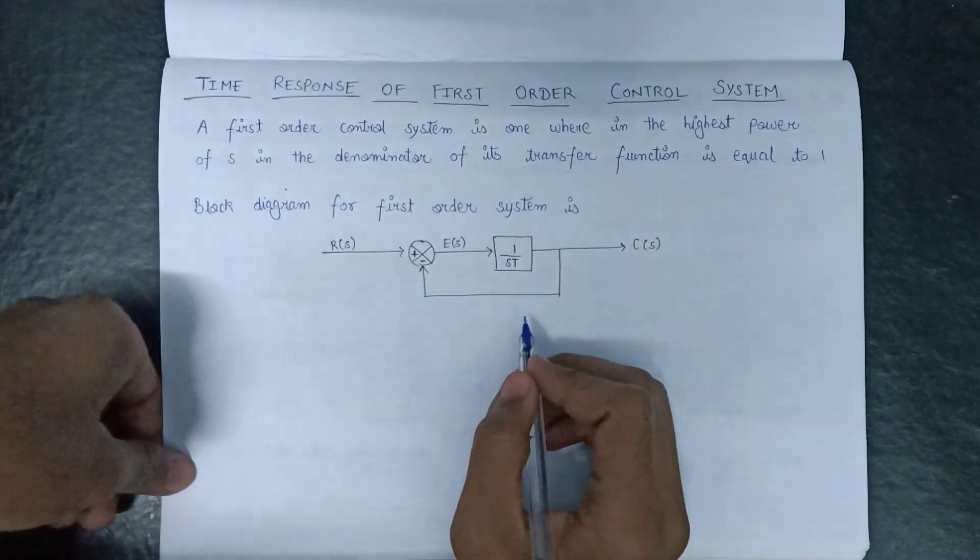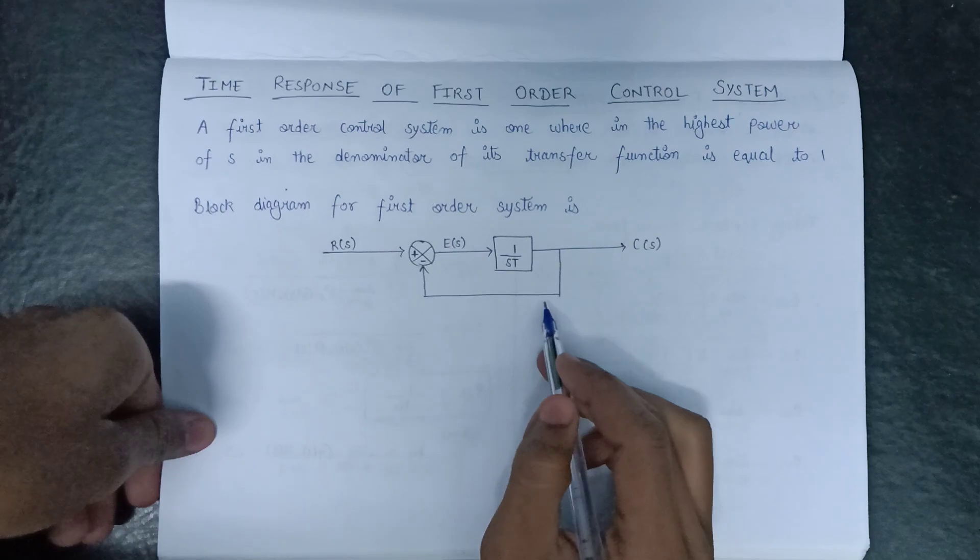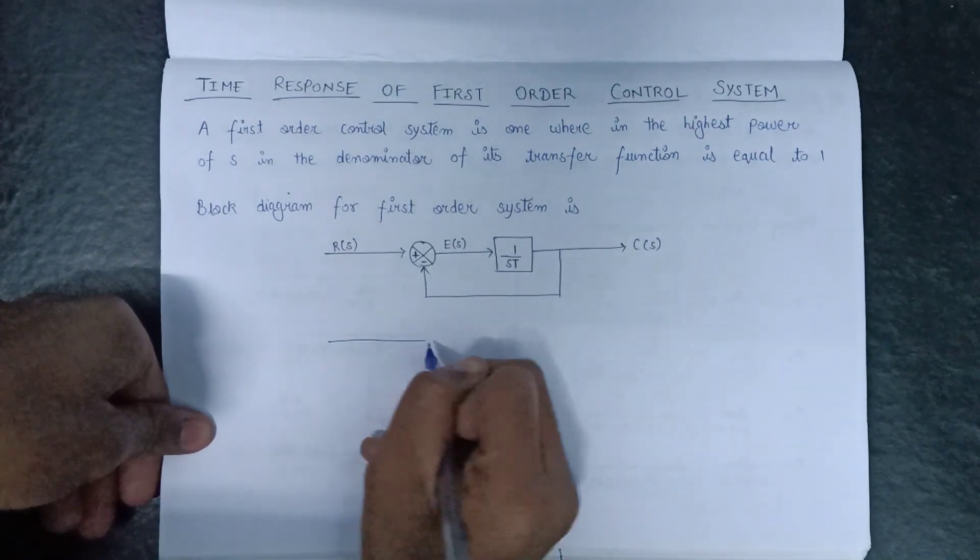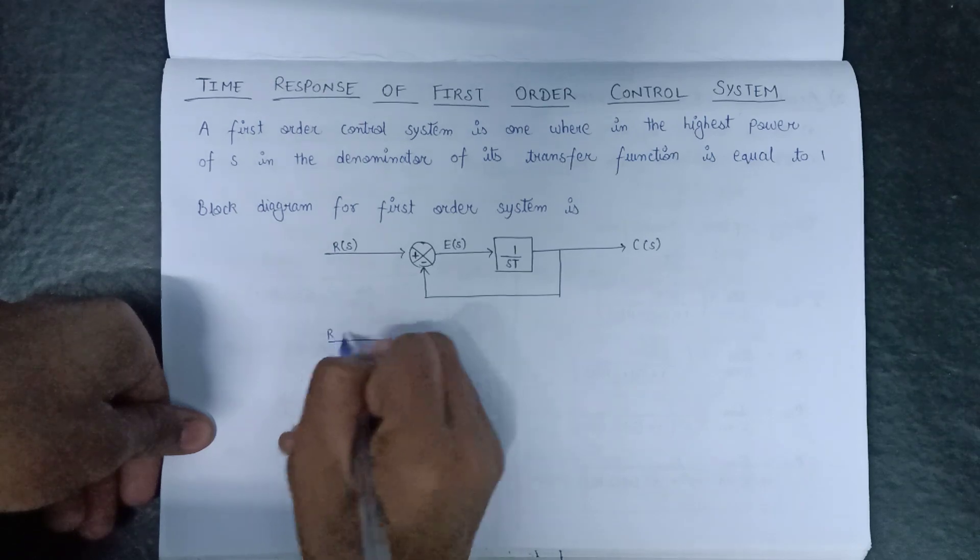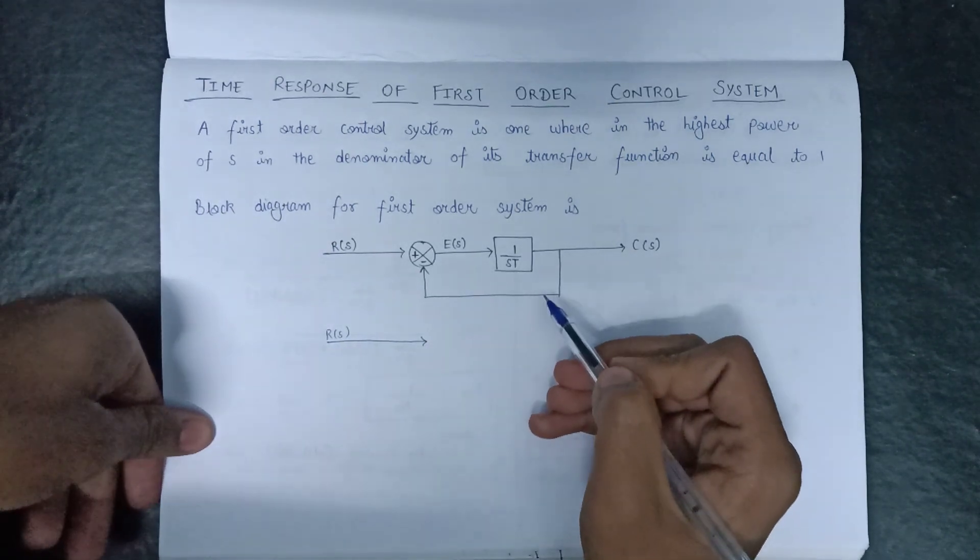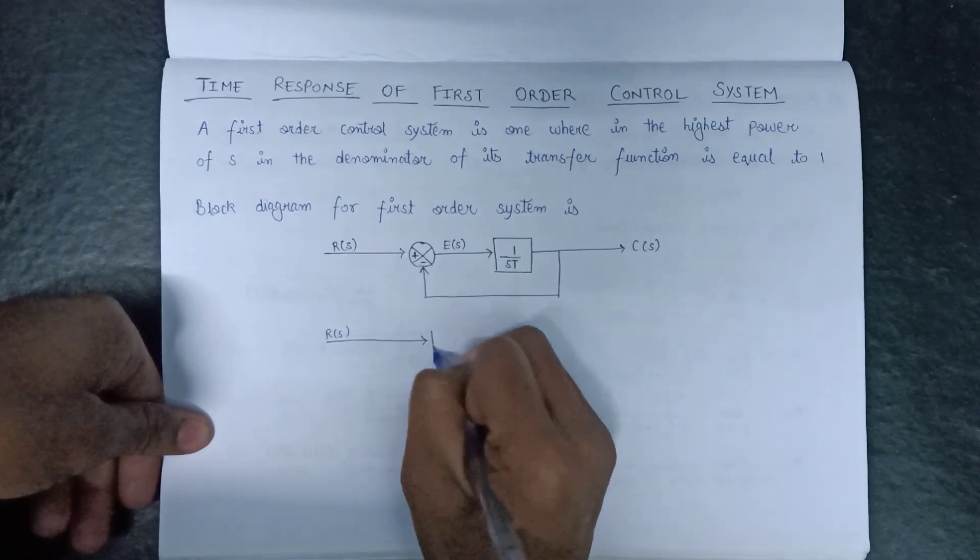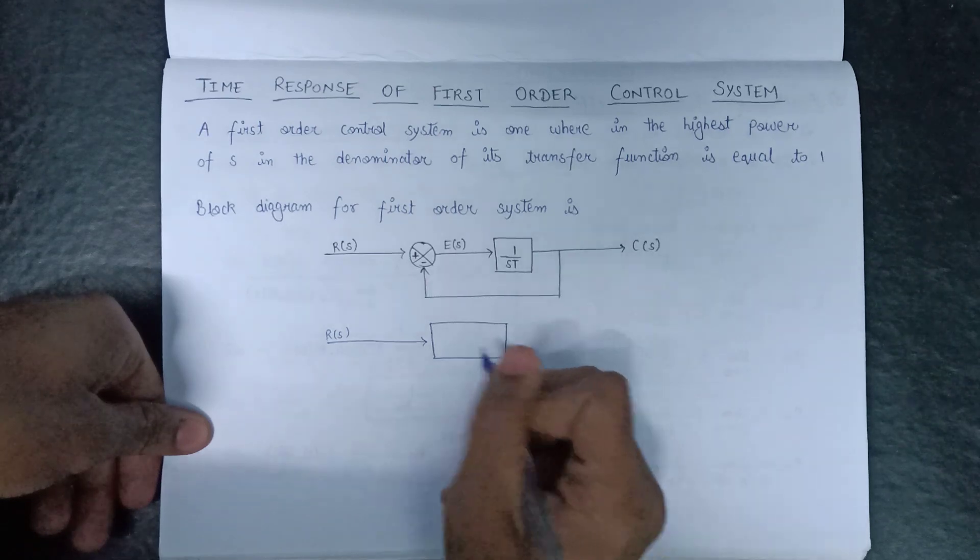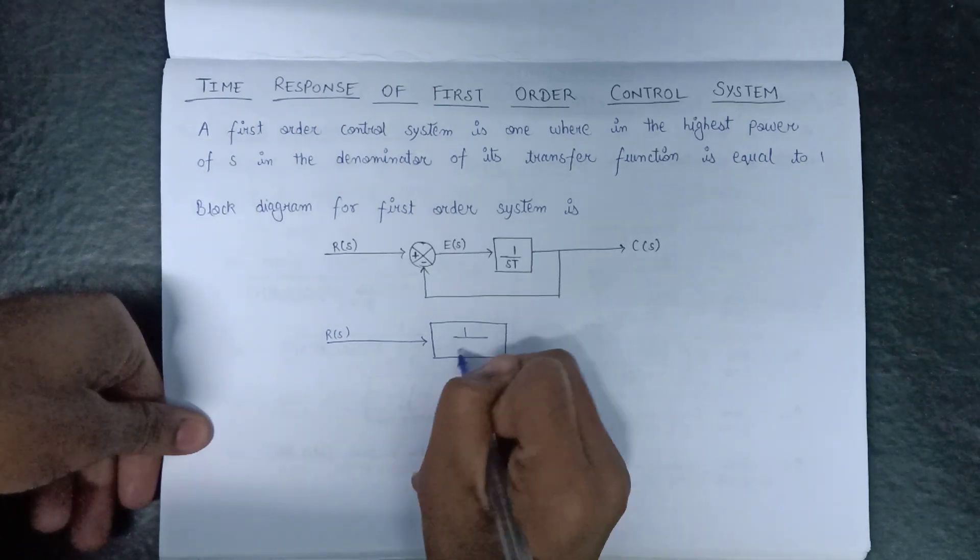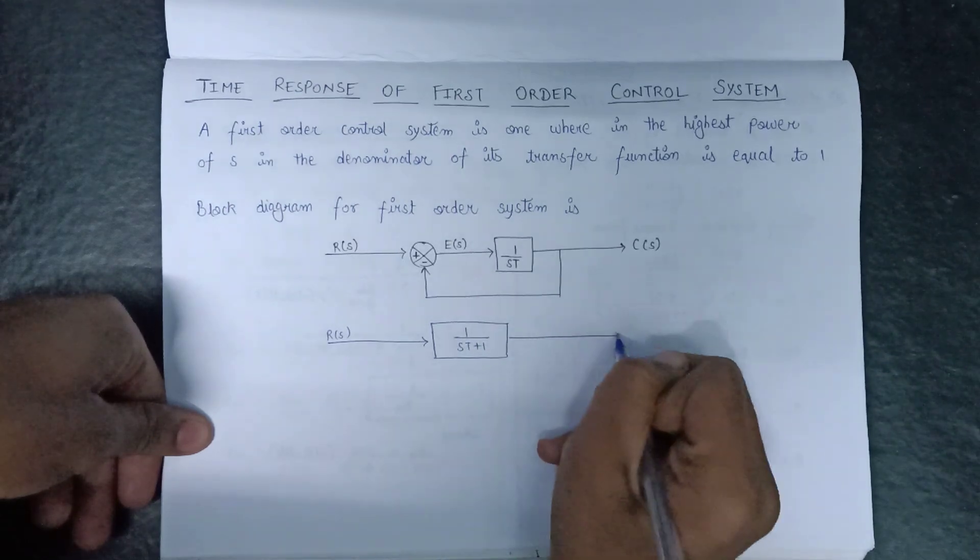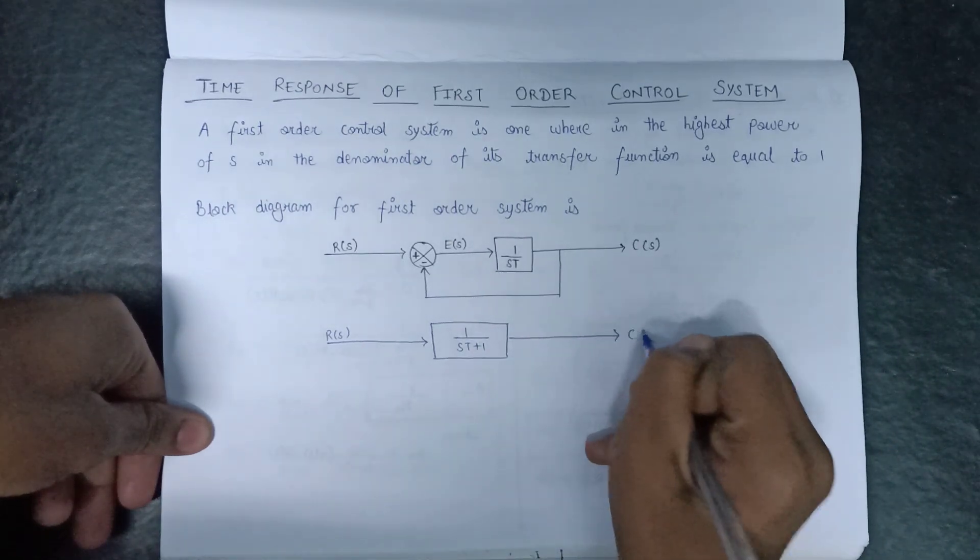If we draw the equivalent block diagram of this circuit, then it will look like this will be our r of s. And by solving these two branches in parallel, we get 1 over st plus 1 and this is our output that is c of s.